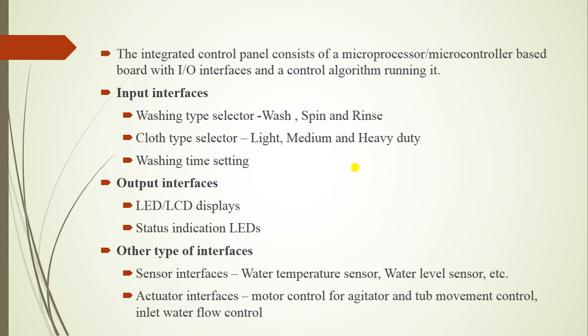Other interfaces include sensor interfaces and actuator interfaces. Sensor interfaces include the two sensors already discussed: water temperature sensor and water level sensor. Actuator interfaces include movement control and inlet water flow control. These are all very important topics in the washing machine embedded system application, and they are frequently asked in Anna University questions. Please go through it and learn it. Thank you.